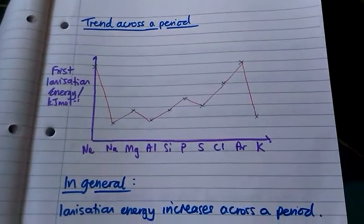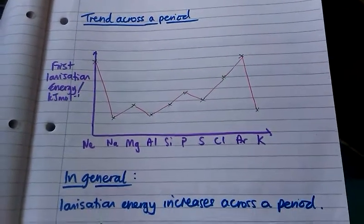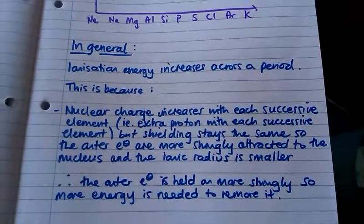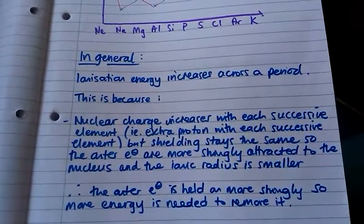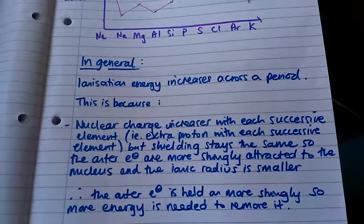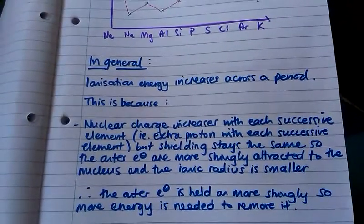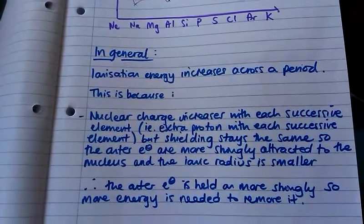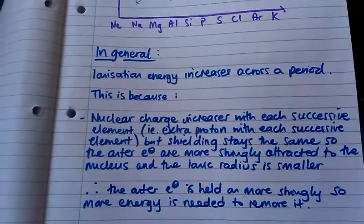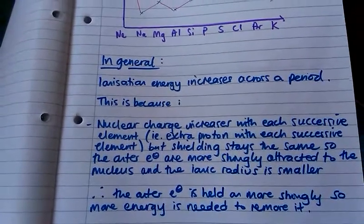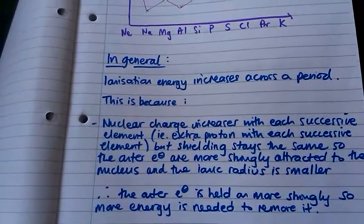In general, the first ionization energy increases across a period because the nuclear charge increases with each successive element — there's an extra proton in the nucleus — but the amount of shielding stays the same. So the outer electrons are more strongly attracted to the nucleus, the ionic radius is also smaller, and the outer electron is held on to more strongly, so more energy is needed to remove it.